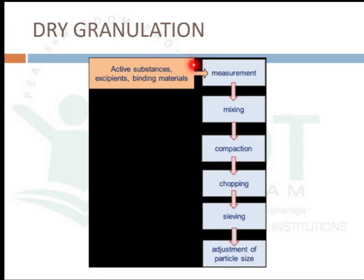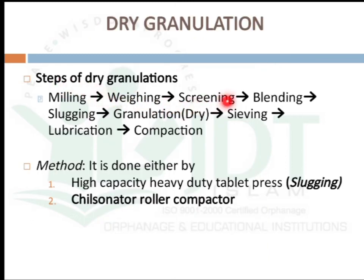The steps of dry granulation: take the active substance, excipients, and binding materials; accurately weigh for each batch; mix; perform compaction or pre-compression; chop to reduce size; sieve to adjust particle size; then final compression. The steps are: milling, weighing, screening, blending, initial compression (slugging), dry granulation by chopping the hard mass produced, then sieving, lubrication, and compaction.